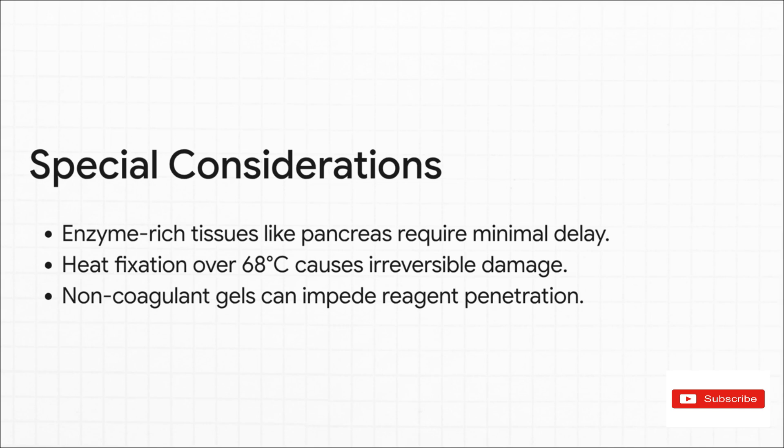For example, some tissues, like the pancreas, are packed with digestive enzymes. They will self-destruct almost instantly, so they need immediate fixation. Second, the very act of chemical cross-linking can sometimes hide the molecular targets, or antigens, that we need to see with special stains. This means we have to use antigen retrieval techniques later to unmask them. We've already talked about the irreversible damage from overheating with microwaves. And finally, it's so important to remember that standard, water-based fixatives like formalin do a terrible job of preserving fats or lipids. They just get washed out during processing and need totally different protocols.